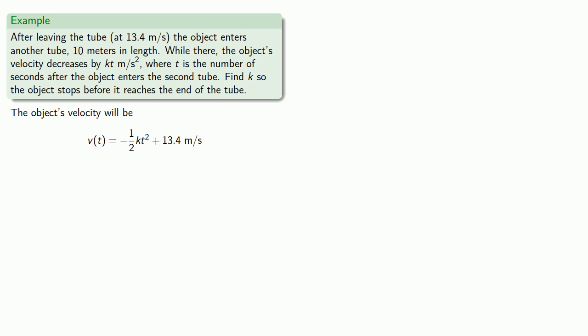What will determine whether the object stops in time is whether or not it's traveled more or less than 10 meters by the time it stops. We need to know the distance the object travels. Distance is measured in meters. We have a velocity in meters per second, so distance will be the antiderivative of velocity.